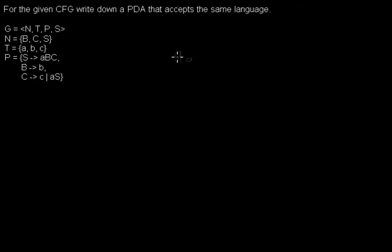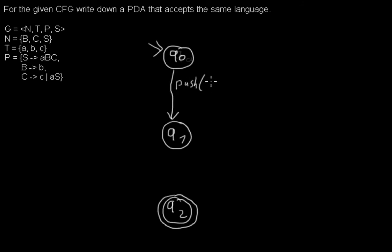So I'm starting with three states which are q0, q1 and q2, while q0 is the initial state and q2 is the final state. Now there's a transition from q0 to q1 where we push something to the stack, namely the start symbol and the dollar, which here is the bottom symbol of the stack.